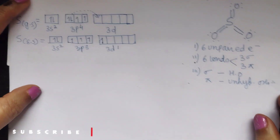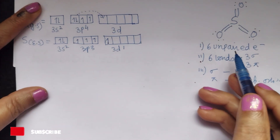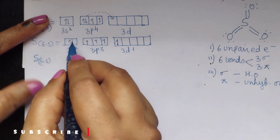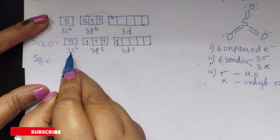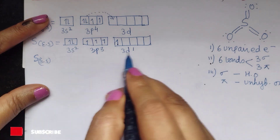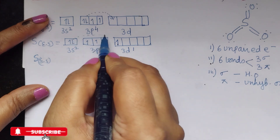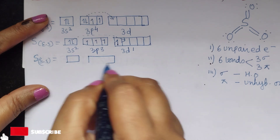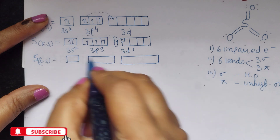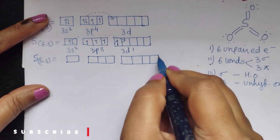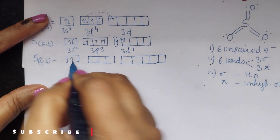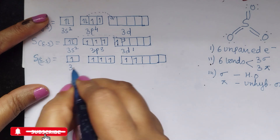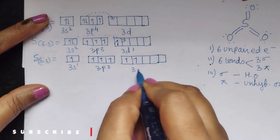The number of unpaired electrons is 4, but we need 6 unpaired electrons, so sulfur will go for a second excitation. In the second excited state, the 3s electron will get excited to the 3d orbital. So the electronic configuration will be 3s1, 3p3, and 3d2. Now we have created 6 unpaired electrons.